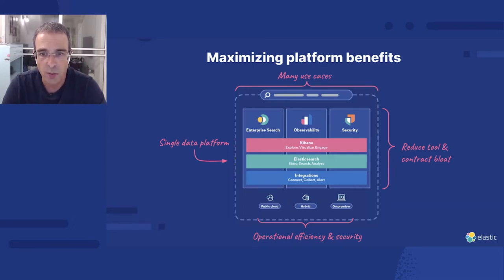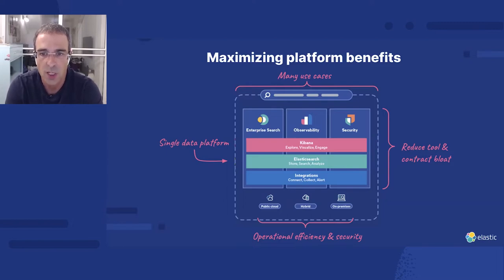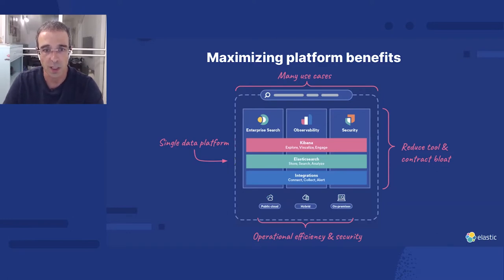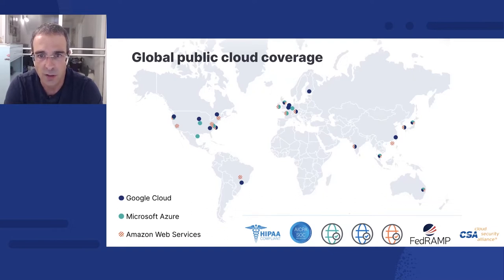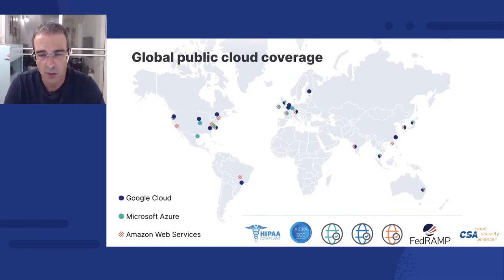While we always support customers who prefer to manage Elasticsearch on their own, we believe the best way to experience the Elasticsearch platform is through our managed service, Elastic Cloud. A primary goal for us is to be where our users are, both in terms of cloud providers and geographical regions. Data has gravity, and by being present in many regions, we allow users to bring their data closer to their applications for increased performance and reduced data transfer costs.